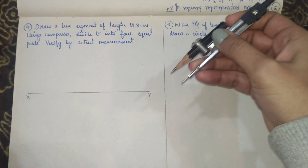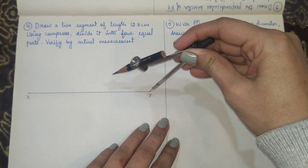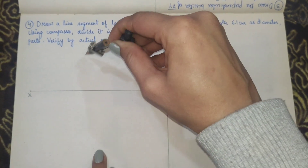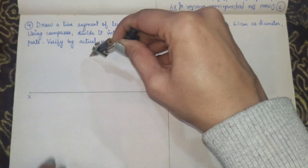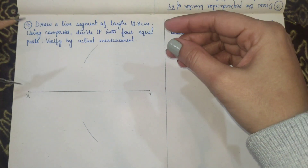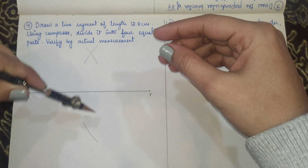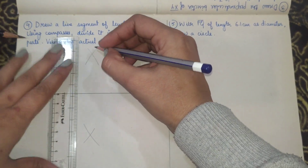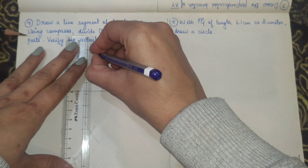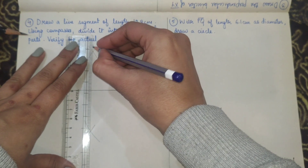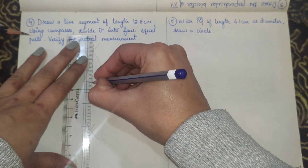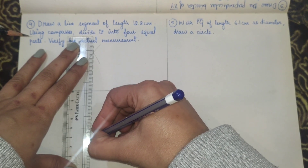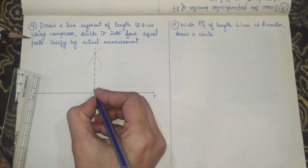Opening up the compass through more than half the length, drawing an arc here and here, then repeating by keeping pointer on the other endpoint - drawing one arc here and one arc here. Now joining these two intersection points. You have bisected this line into two equal parts. Name this midpoint O.